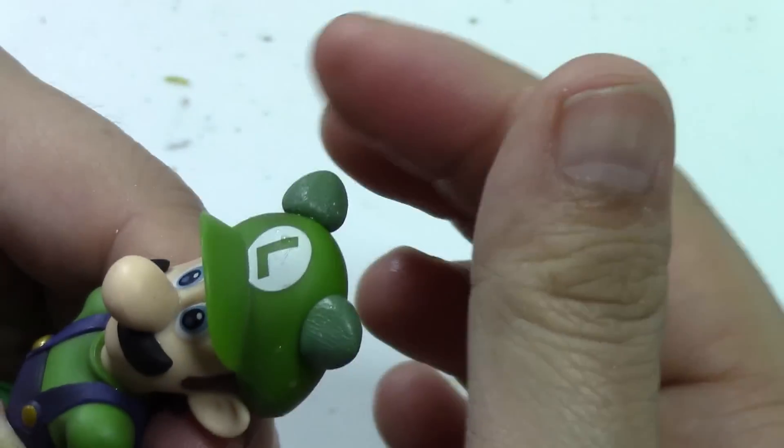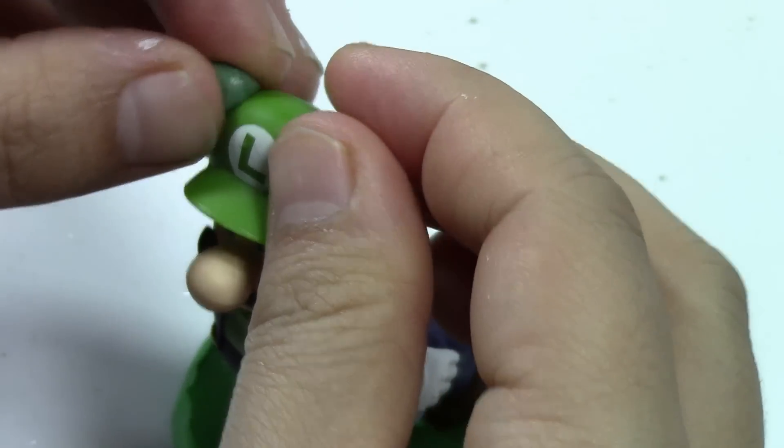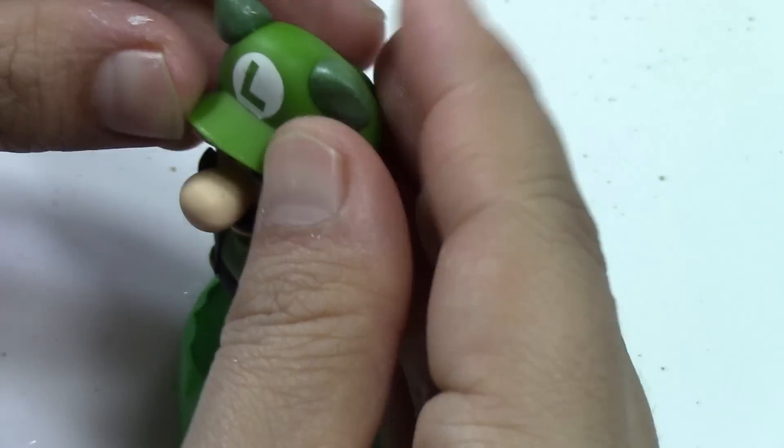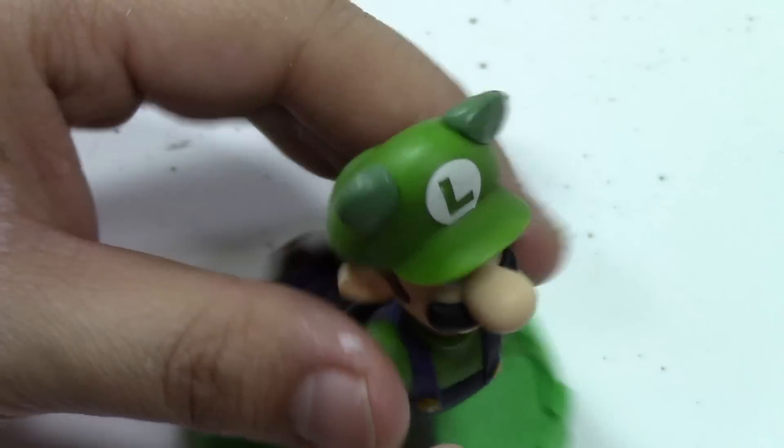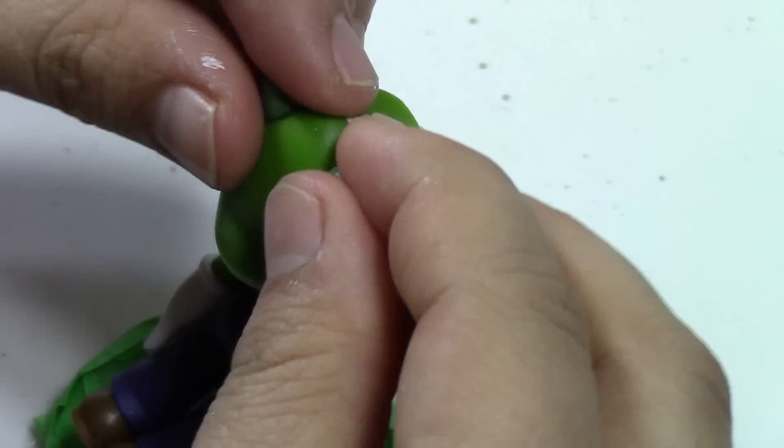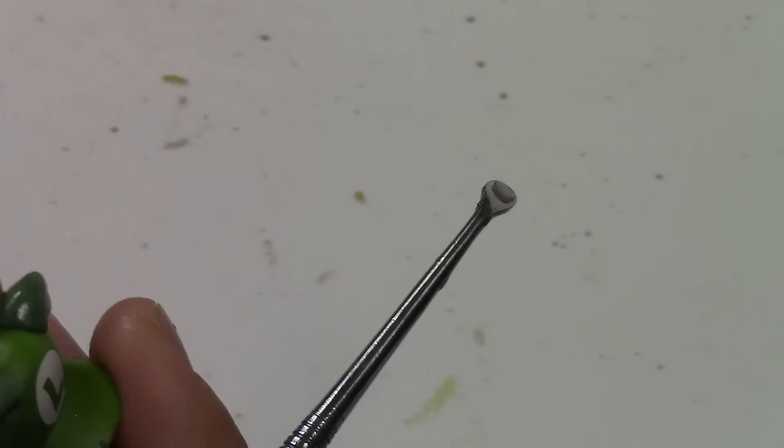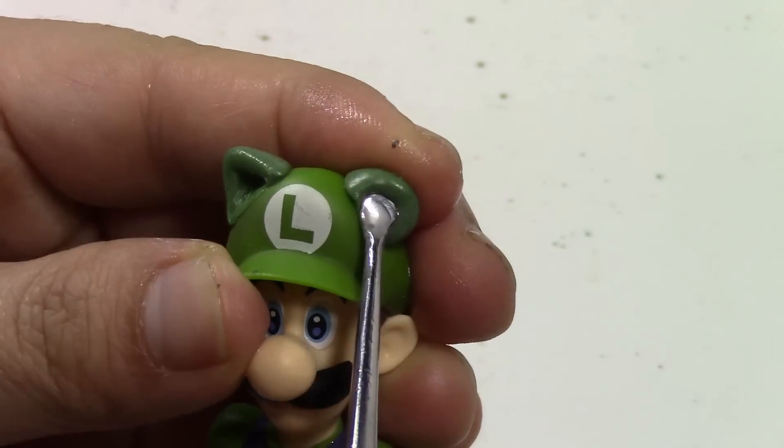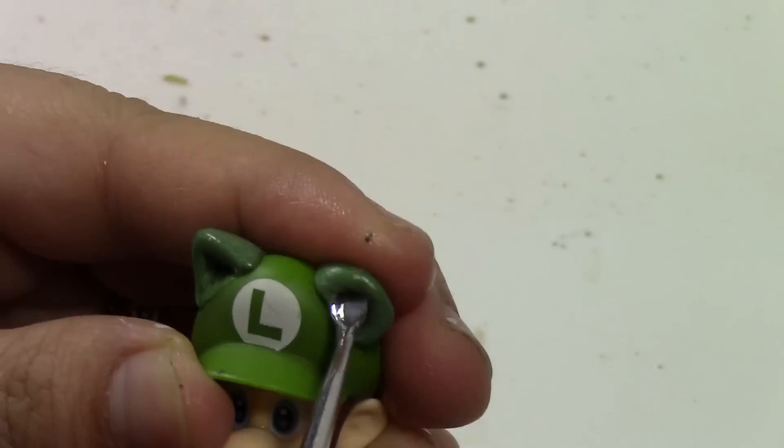Again, I cannot stress enough the liberal use of water to keep the surfaces smooth and to keep it from sticking to your fingers and instead sticking actually to the hat where you want it. Now I'm going to take my sculpting tool and I'm going to cover it in water to keep it lubricated, and I'm going to indent the ear shape into it.